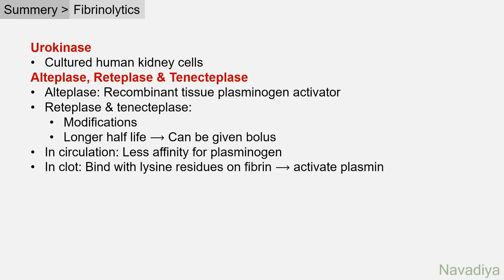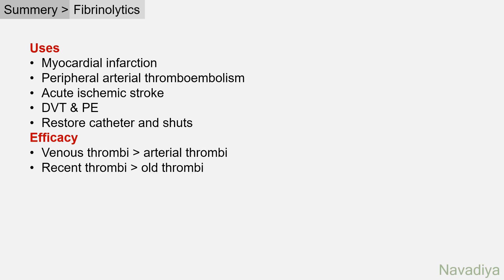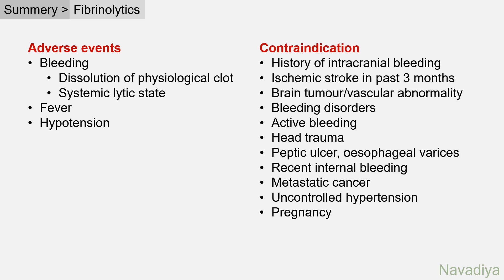In circulation, alteplase, reteplase, and tenecteplase have less affinity for plasminogen. However, in the clot they bind lysine residues on fibrin, which increases activation of plasminogen. Fibrinolytics are used in myocardial infarction, peripheral arterial thromboembolism, acute ischemic stroke, deep vein thrombosis, pulmonary embolism, and to restore catheters and shunts. They are more effective on venous thrombi than arterial thrombi and on recent thrombi than older thrombi. Adverse events include bleeding due to dissolution of physiological clots and the systemic lytic state, as well as fever and hypotension.